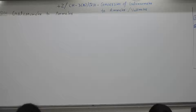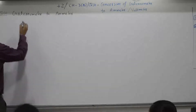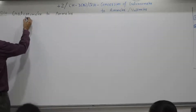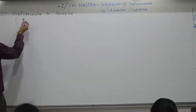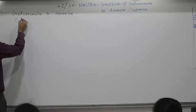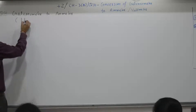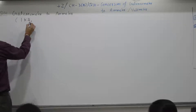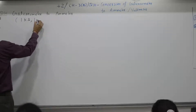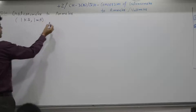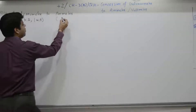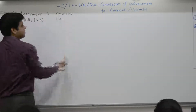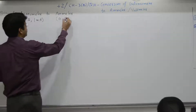We can understand this through an example. The galvanometer is given — resistance of the wire is 1 kilo ohm and it is 1 milli ampere. You want to change it to an ammeter of rating 0 to 1 ampere.